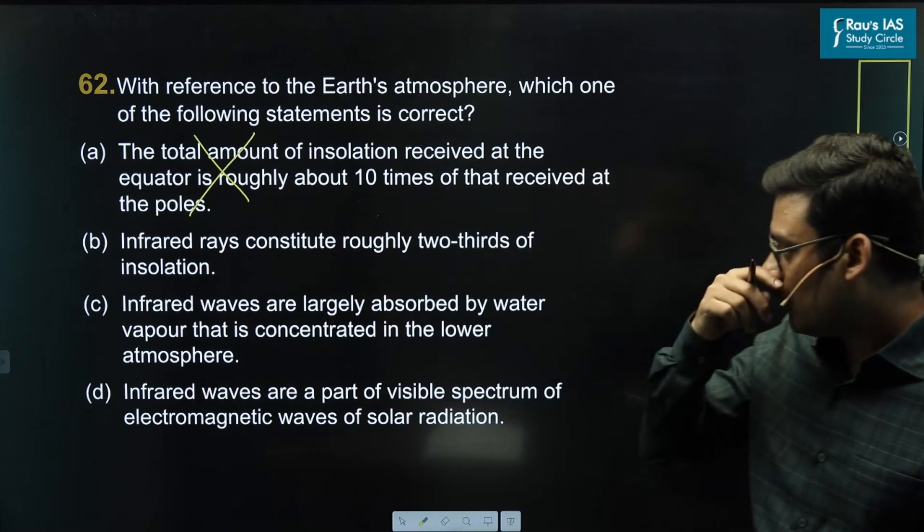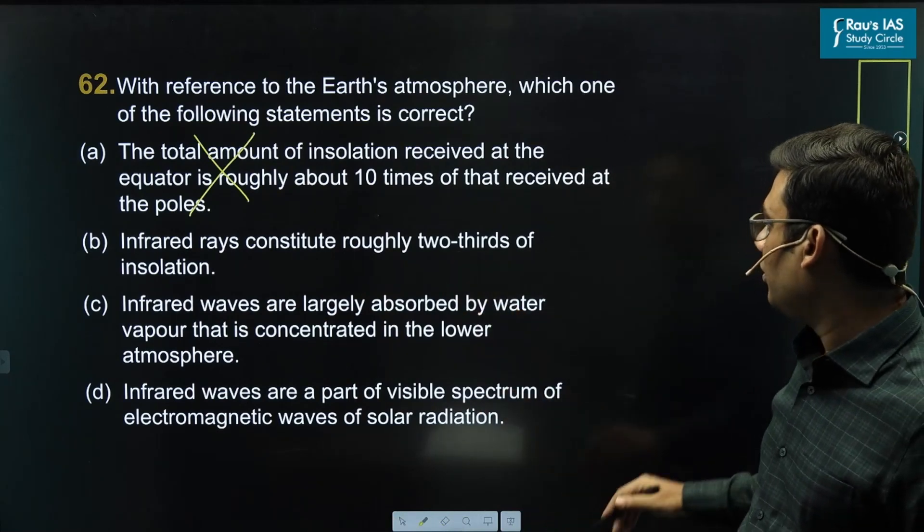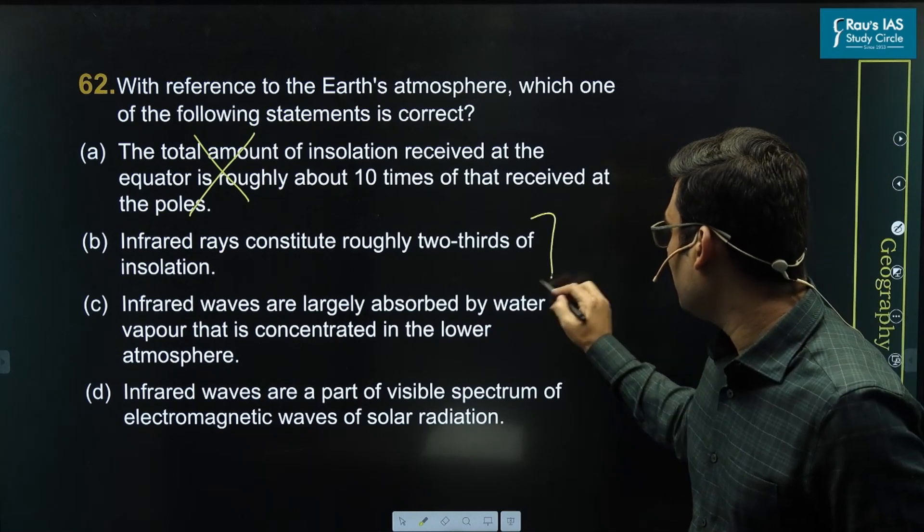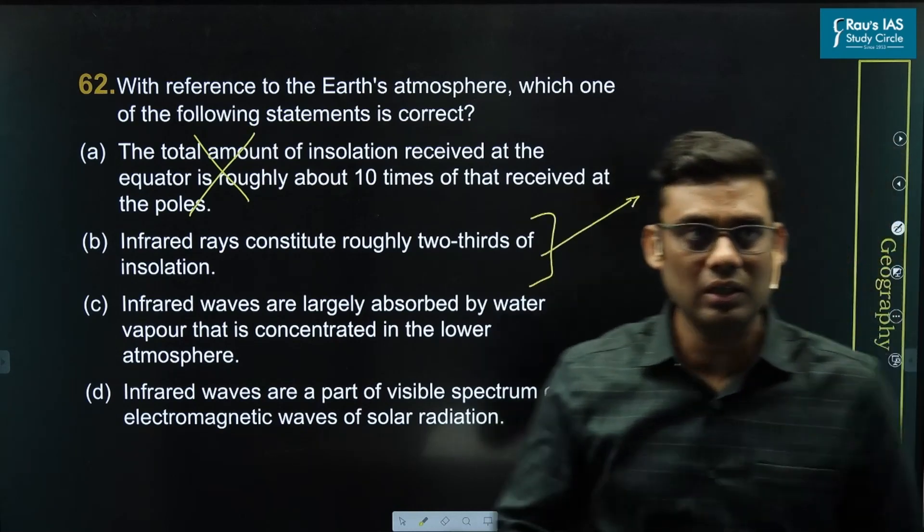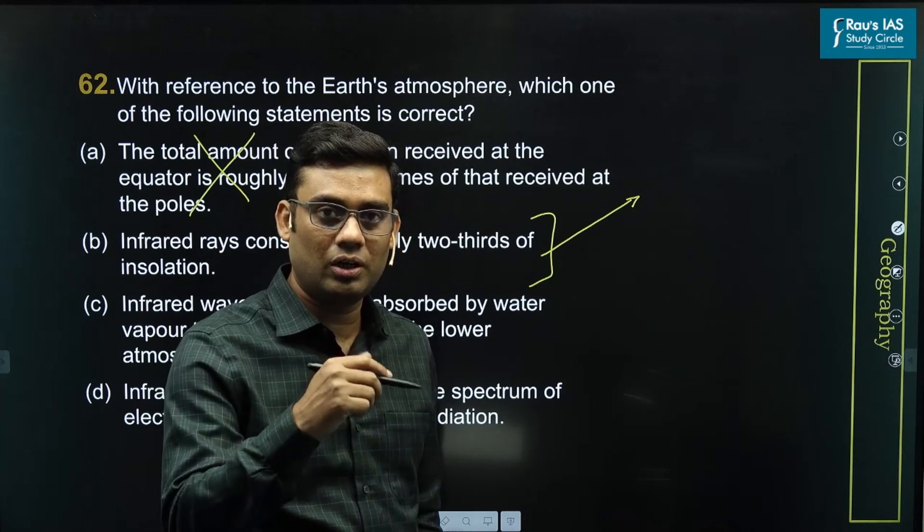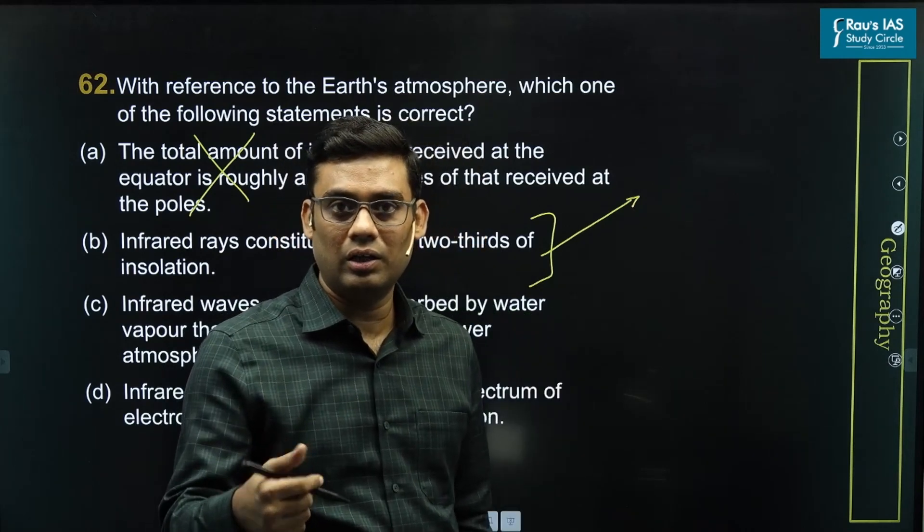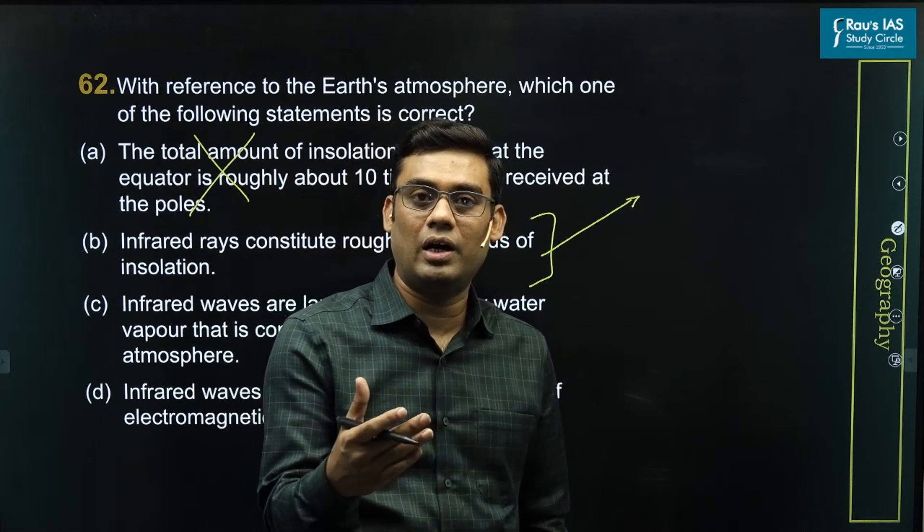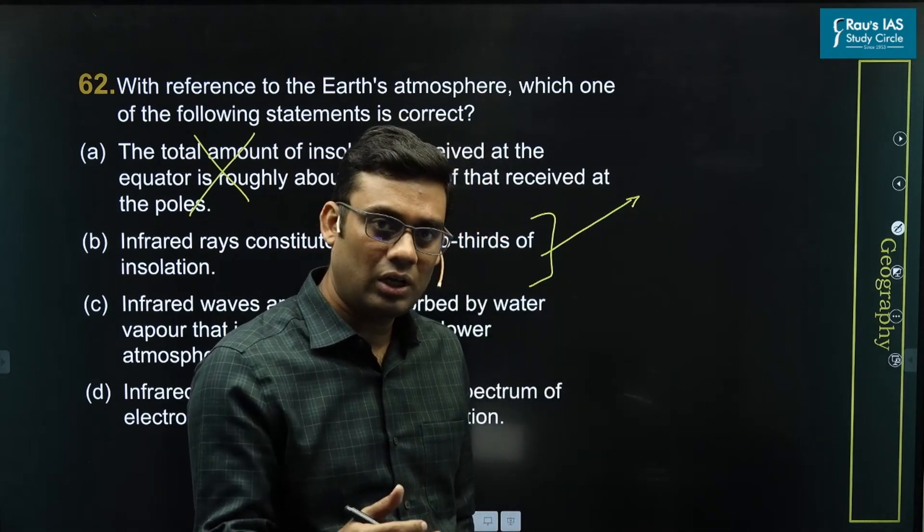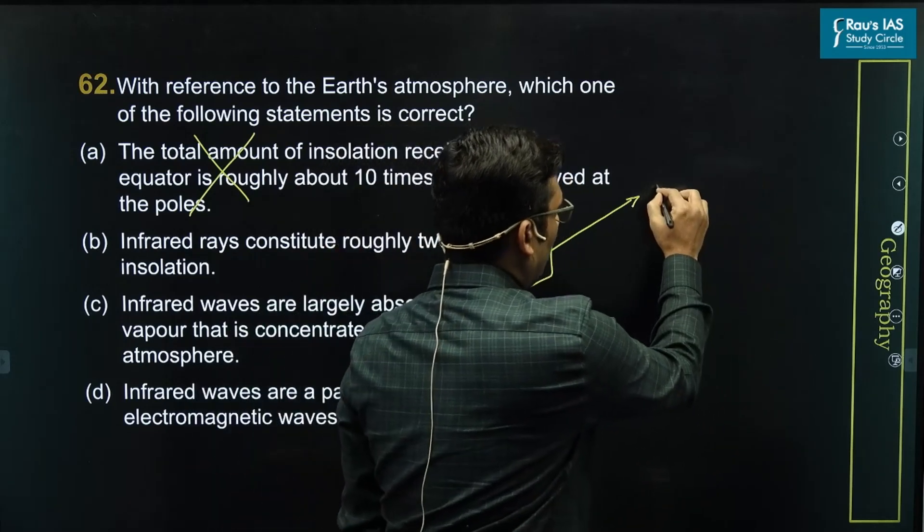Second statement: infrared rays constitute roughly 2 thirds of the insolation. With respect to this statement, we can see the different parts of the spectrum from the insolation. The radiation from the sun emits energies at different frequencies or different wavelengths.